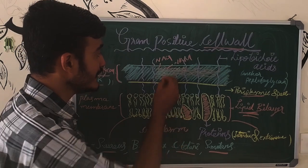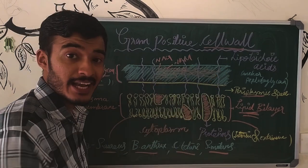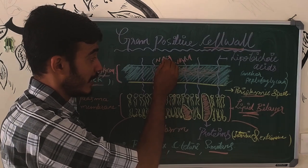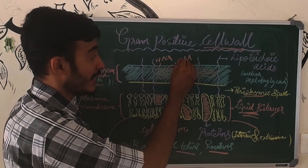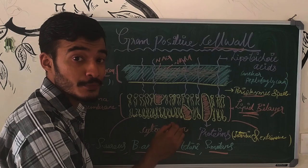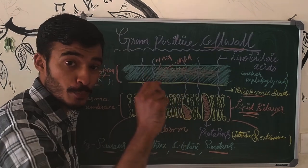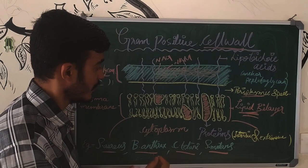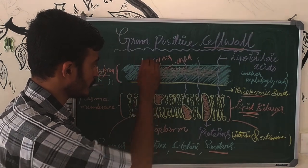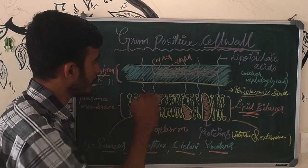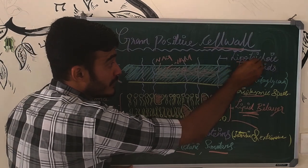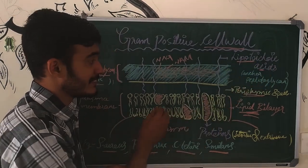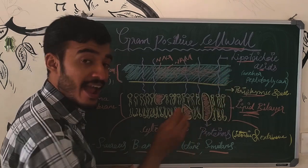We call it the proteins — these are the hard molecules. We call it N-Acetylglucosamine and N-Acetylneuraminic acid. It is the lipoteichoic acid — it can be the monomer. It is stored in the peptidoglycan. We also call it teichoic acid and lipoteichoic acid.